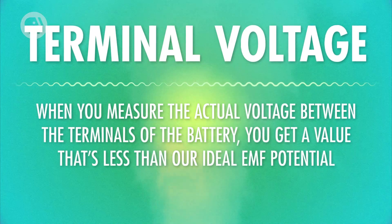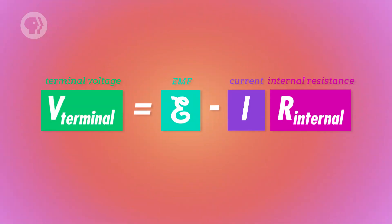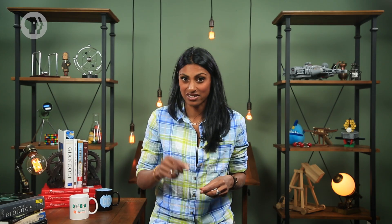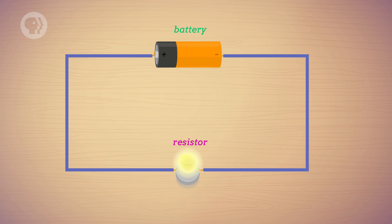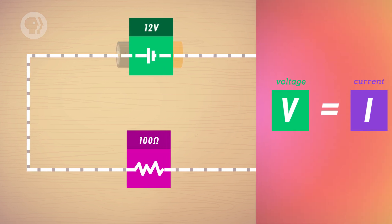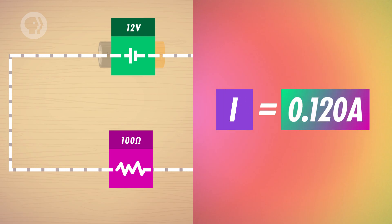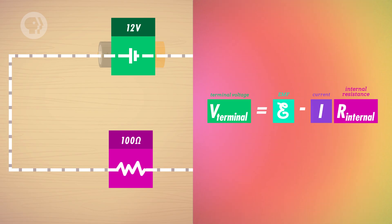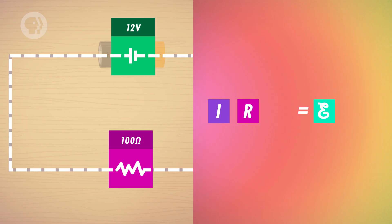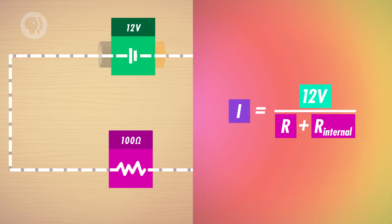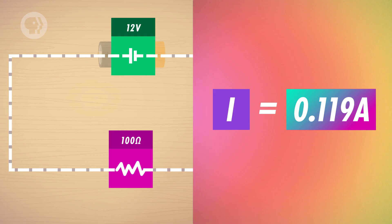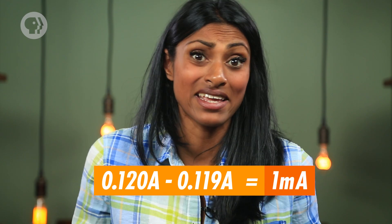This real voltage is called the terminal voltage. You calculate the terminal voltage by subtracting the voltage drop due to internal resistance from the supplied EMF voltage, designated by a script E. This internal voltage drop, according to Ohm's law, is equal to the current through the circuit times the internal resistance. The internal resistance is typically much smaller than the resistance of any connected devices, so the terminal voltage is usually only a little bit less than the EMF voltage. For example, say you have a 12-volt battery with no internal resistance connected in a circuit with a resistor of 100 ohms. You can use Ohm's law to find that the resulting current is 0.120 amperes. Now let's say the battery has an internal resistance of 1 ohm. Solving with both the internal resistance and the circuit resistance, you find that the current is now 0.119 amperes — only a 1 milliampere difference.